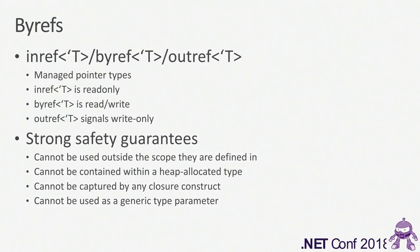Byrefs form a trifecta. There's inref, byref, and outref. An inref is a read-only pointer — the caller that has a handle to that pointer can only read the value; you cannot write to it. A byref is read-write — you can do basically whatever. An outref, for compatibility reasons, has the same semantics as byref, similar to how it exists in C#, but it's there for documentation purposes to indicate you're only writing to the pointer. And they have subsumption rules — if you're expecting an inref or an outref, you can pass in a byref and it'll work.